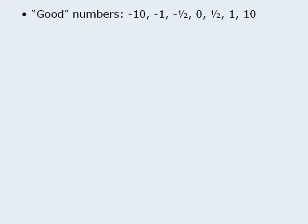Some good numbers include negative 10, negative 1, negative one-half, zero, one-half, one, and ten. Here we have negative numbers and positive numbers. We have zero, which is a special number with properties that other numbers don't have, and it's typically easy to plug into equations. Negative 1 and 1 are also typically easy to plug into equations. Two numbers that often prove very useful are negative one-half and one-half. These numbers have some very interesting properties that differ from other numbers, so keep them in mind. These aren't the only numbers to consider, but they are a good start.